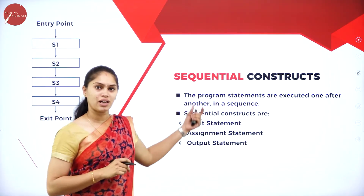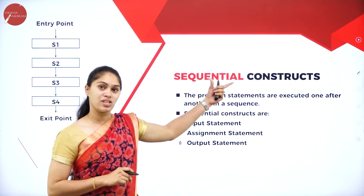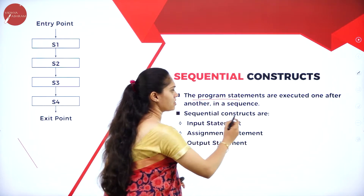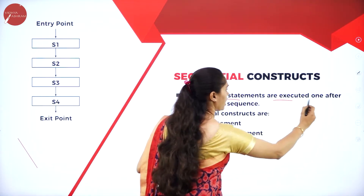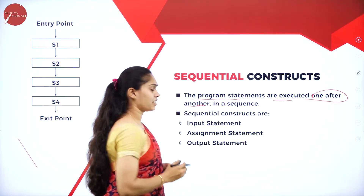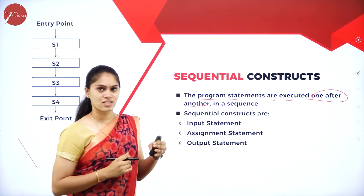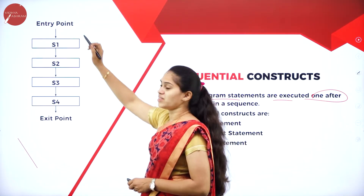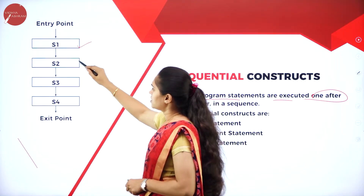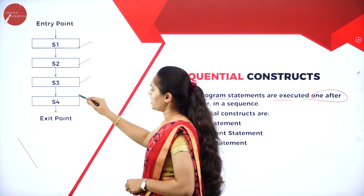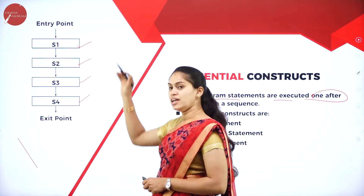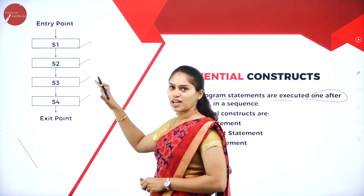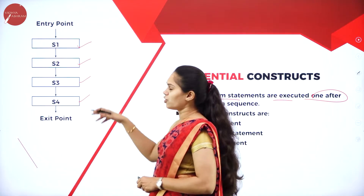In a sequential construct, execution is straightforward — statement one executes first, then statement two, then three, then four, until the end point is reached. There is no back-looping. There can be any number of statements; the image shown has four as an example.